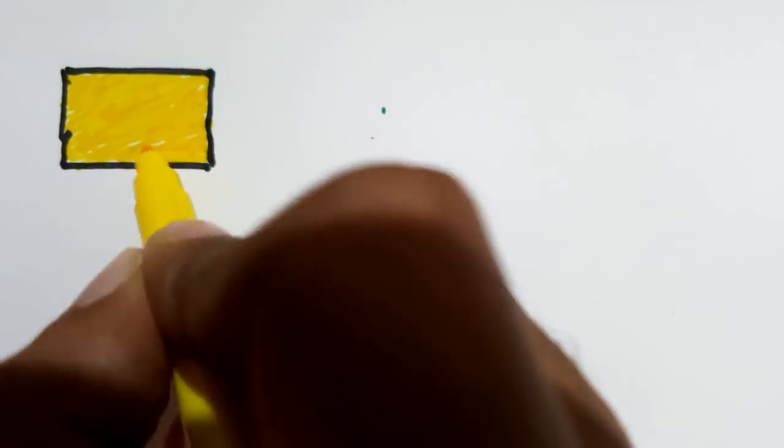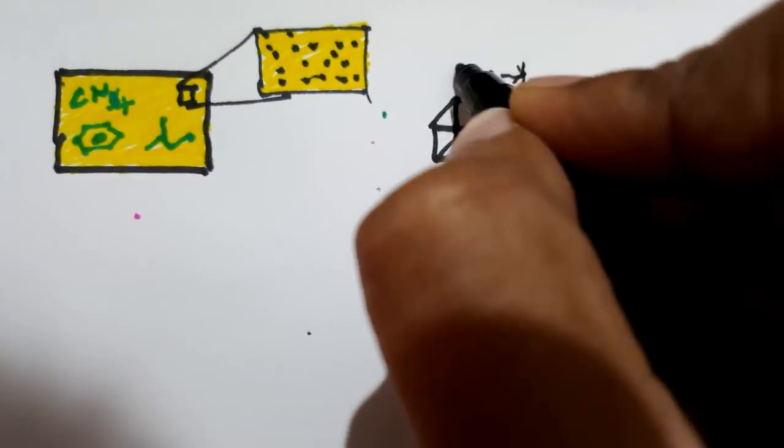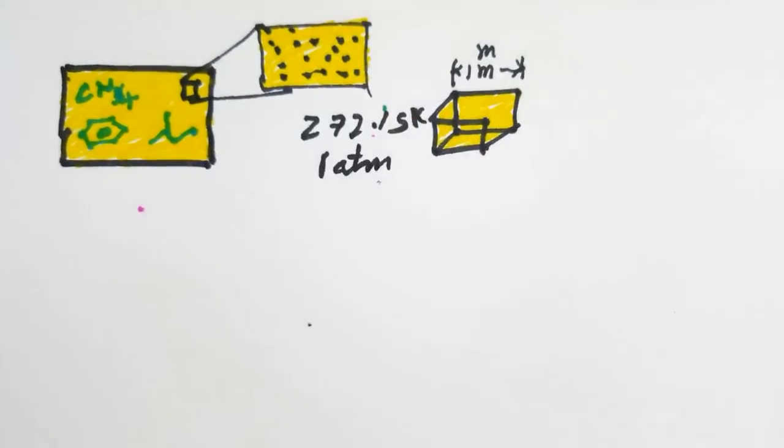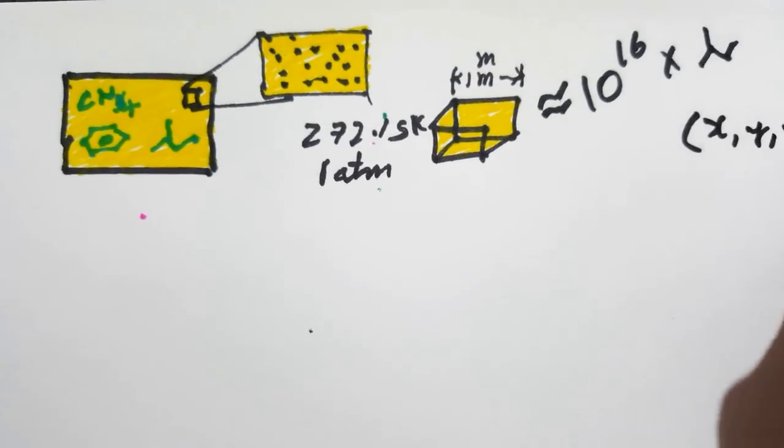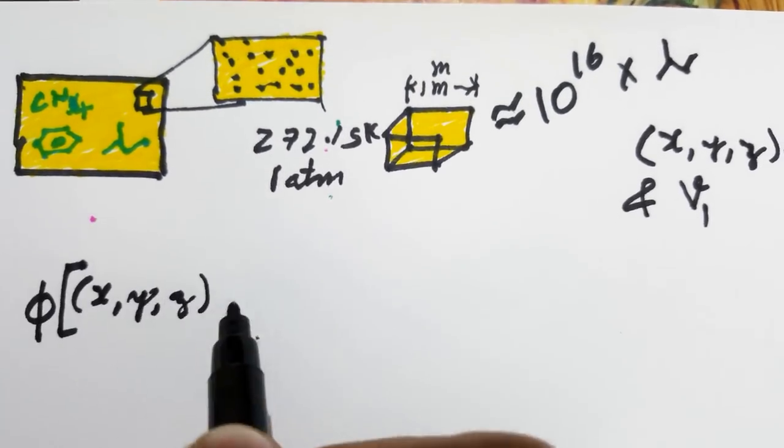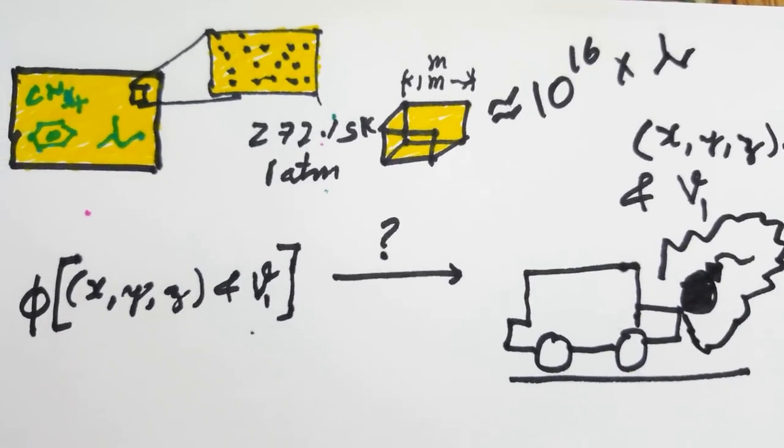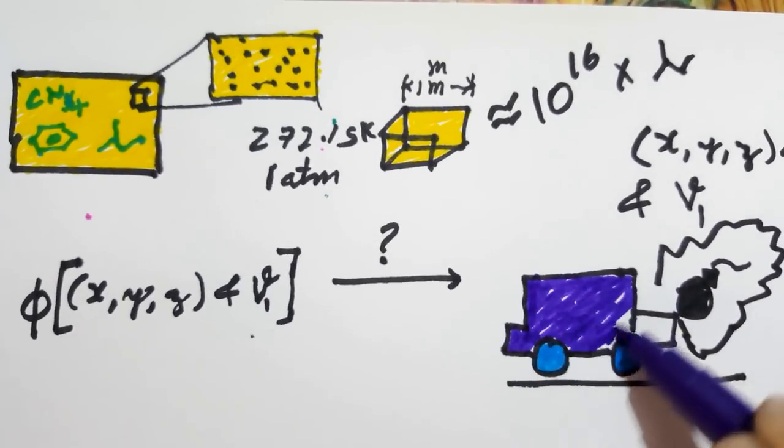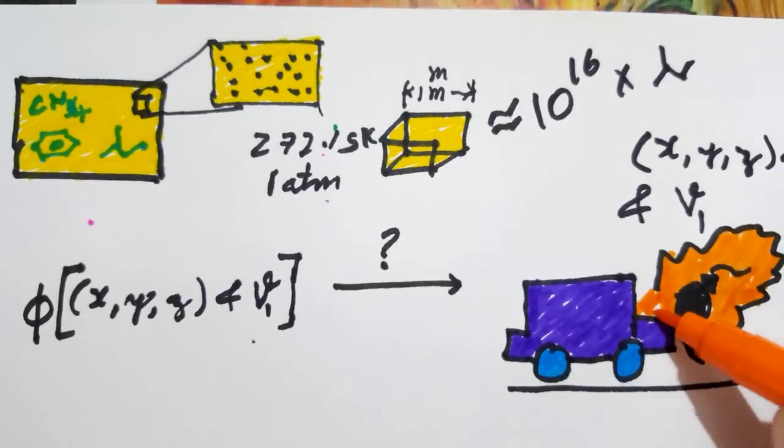Now, we all know that matter is made up of molecules and in turn of atoms. For example, one millimeter cube of air at standard temperature and pressure contains 10 to the power of 16 molecules, each of which has a position and velocity. And these positions and velocities are generally not useful for determining how macroscopic systems will act.